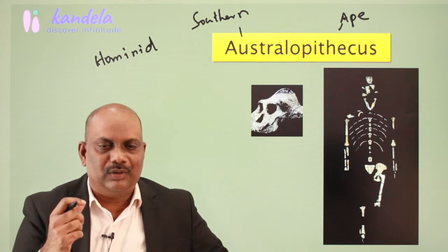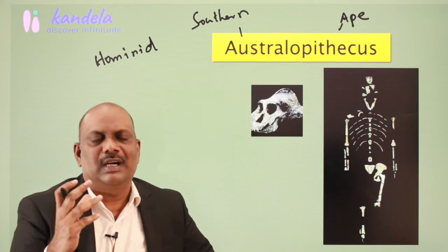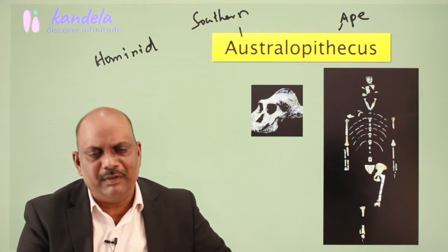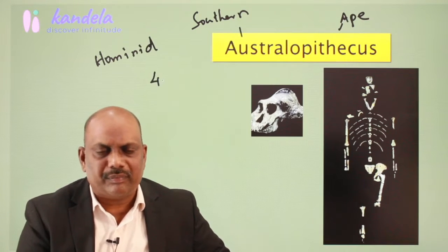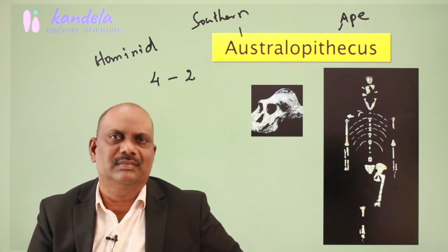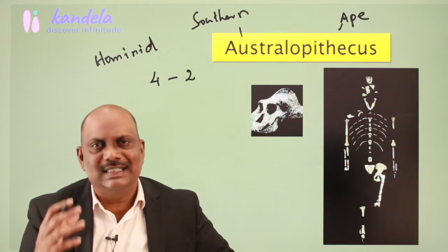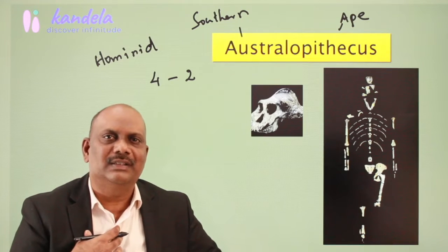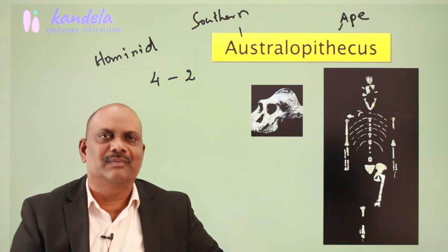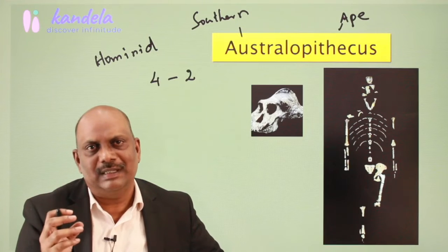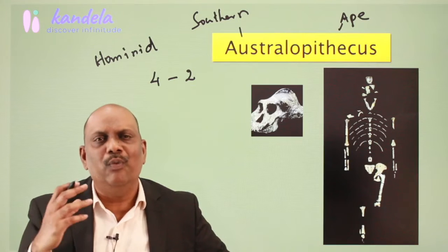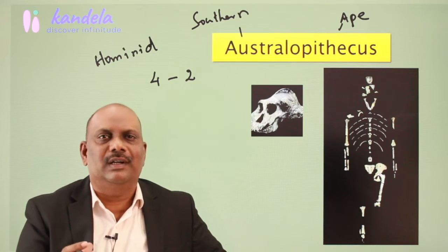Australopithecus includes a collection of hominid species which lived roughly between four to two million years ago. It is considered that we human beings evolved from, or descended from, Australopithecus — meaning Australopithecus were our human ancestors.